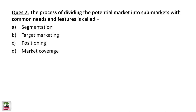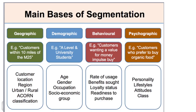The process of dividing the potential market into sub-markets with common needs and features is segmentation. There are four ways to divide the market: geographical, demographic, psychographic, and behavioral. Demographic segmentation divides the market by age, gender, occupation, and socioeconomic group. Geographic segmentation divides by location — for example, somebody is from India, somebody is from Ludhiana.